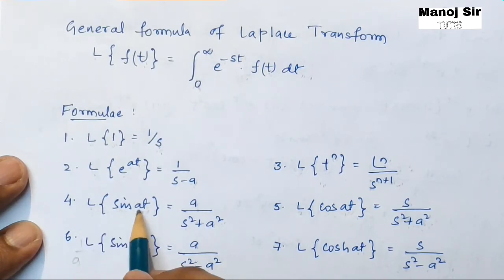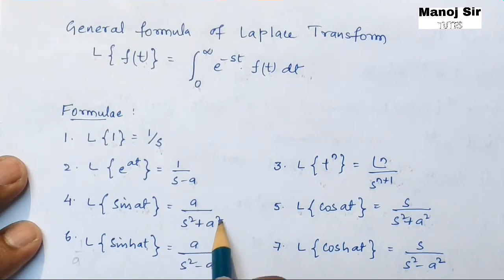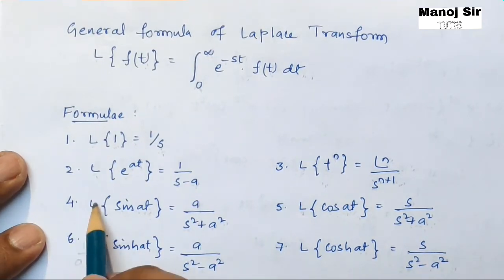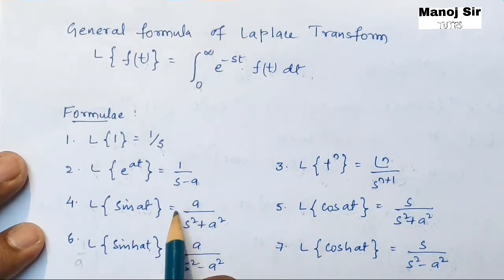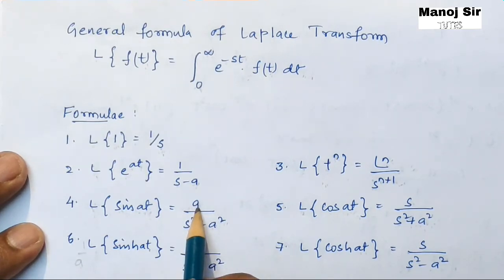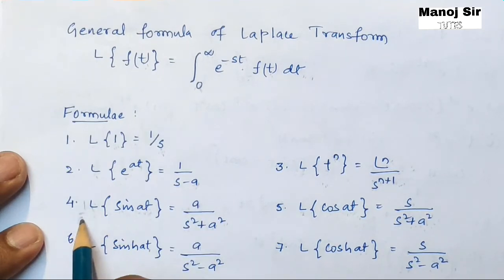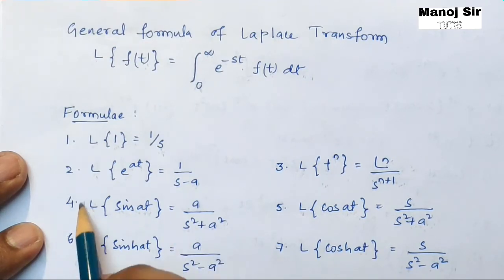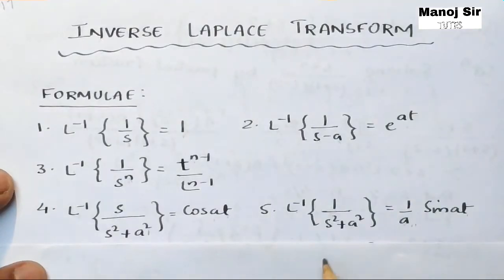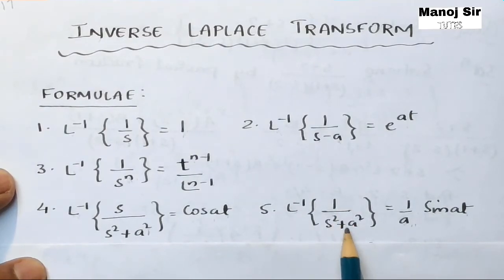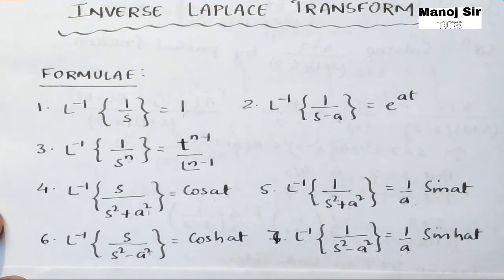Next formula: Laplace transform of sin(at) equals a / (s² + a²). Taking this Laplace transform to the right-hand side, we get inverse Laplace transform of a / (s² + a²). Since a is a constant we can factor it out, giving inverse Laplace transform of 1 / (s² + a²) equals (1/a) · sin(at).